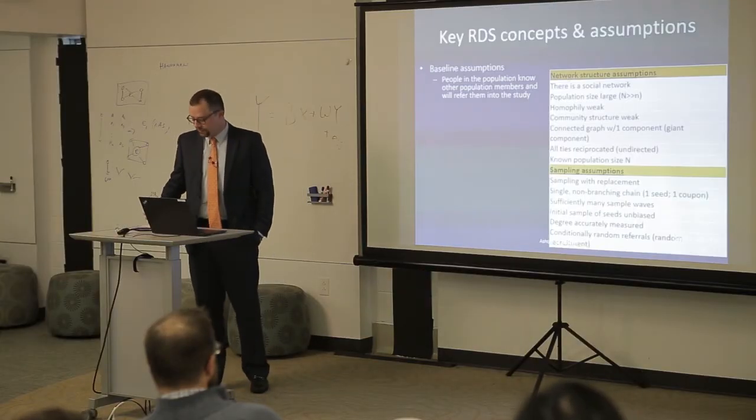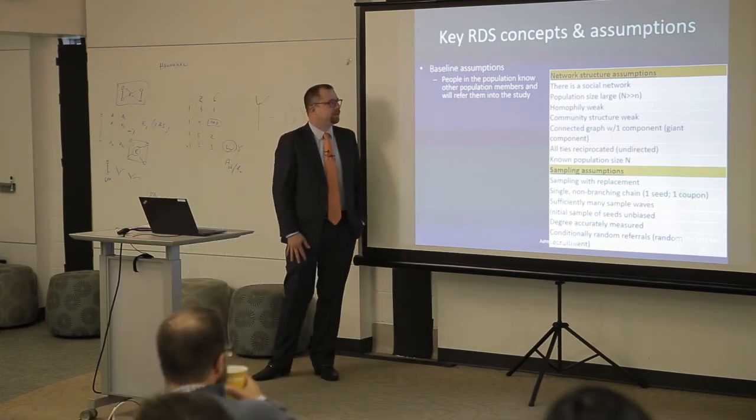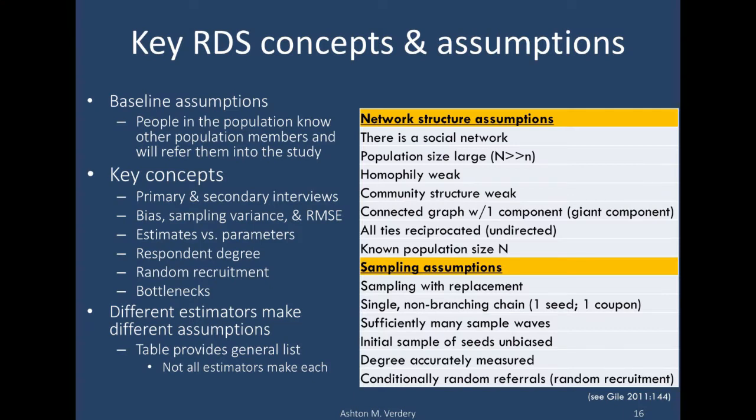Respondent-driven sampling has a number of assumptions built in. The baseline assumption is that individuals in the population know one another and would be willing to refer each other into the survey. If you have a population where people don't want to disclose that they're in the population or that their friends are in it, RDS sometimes doesn't work. There are a number of key concepts to review, one being the idea of two interviews with each participant: the primary interview when they come in as a respondent, and then a secondary interview after someone has recruited someone into the study, where they may come back in to redeem the secondary incentive.